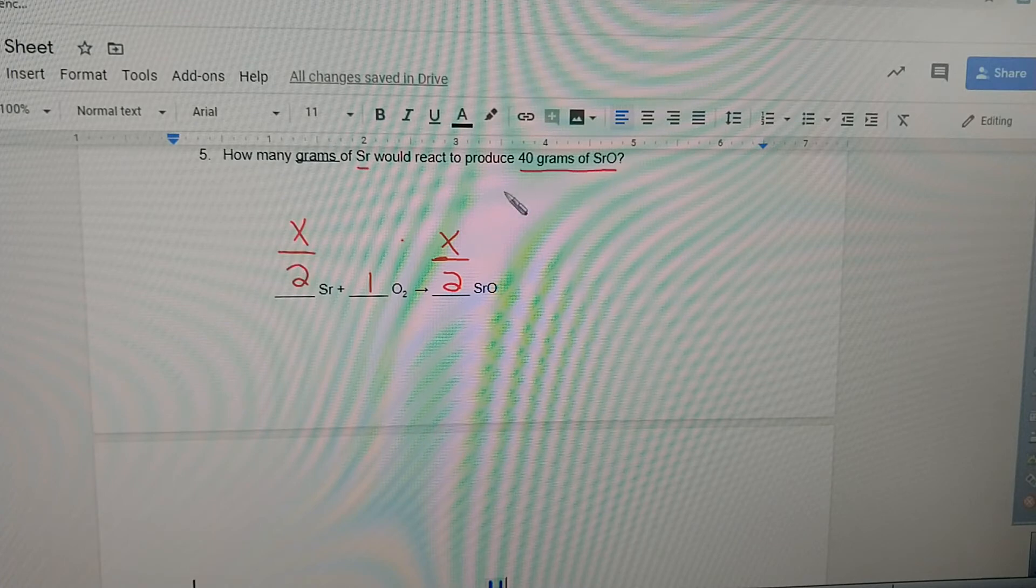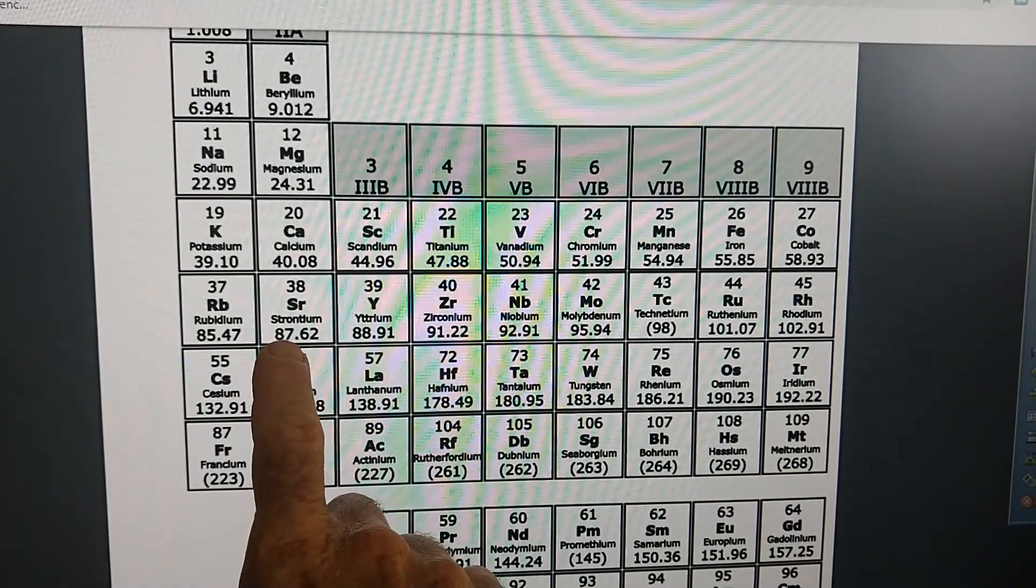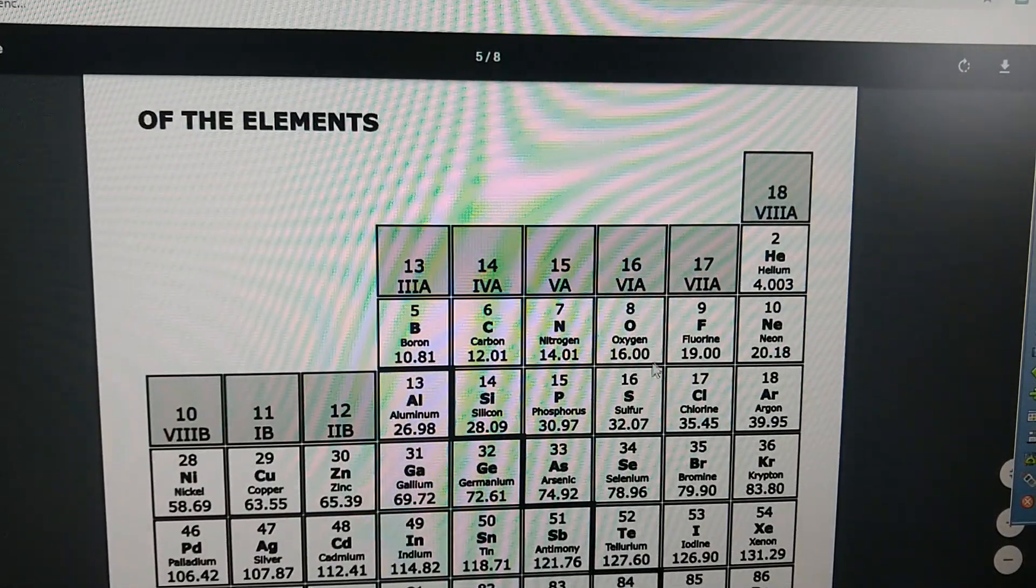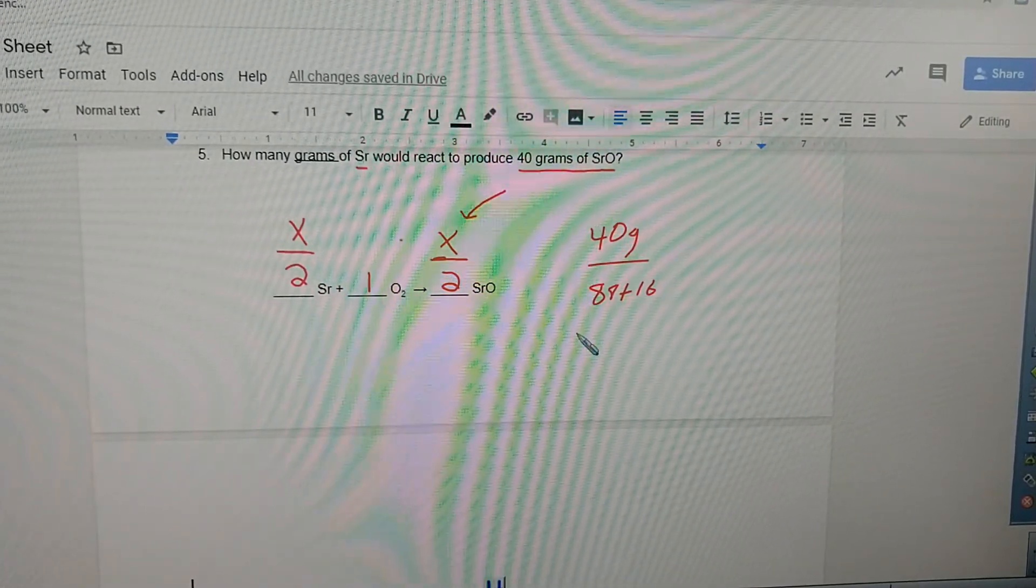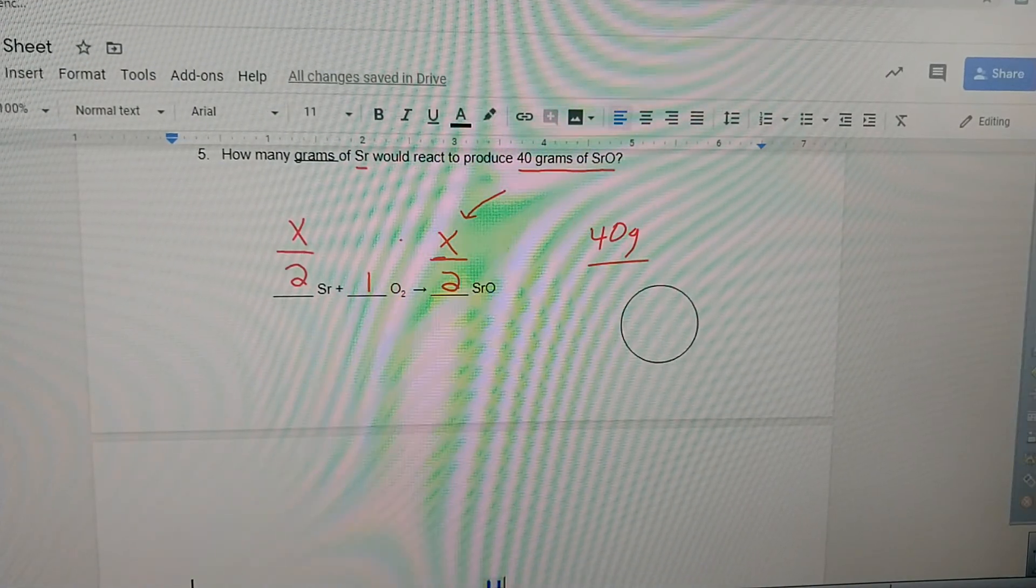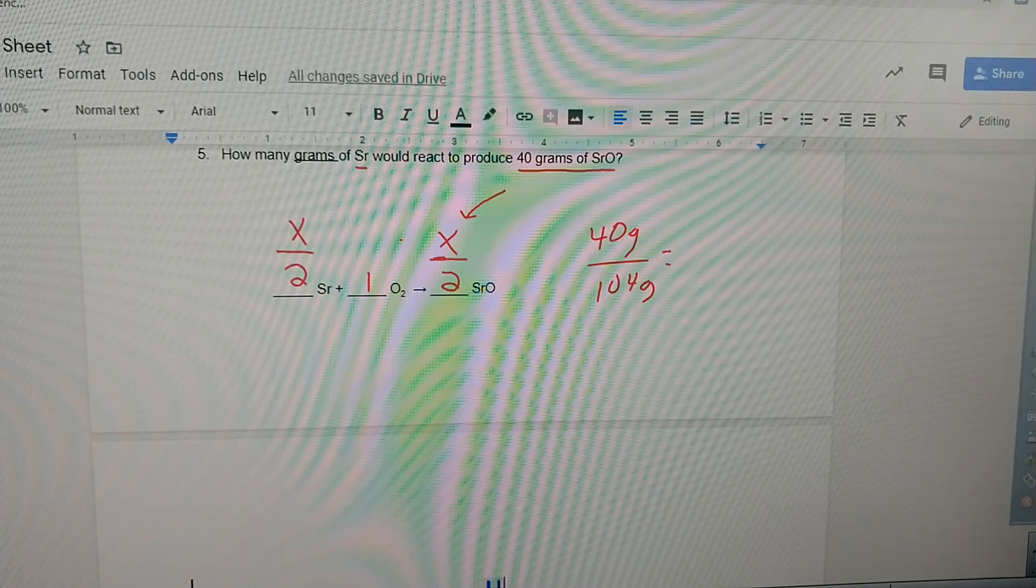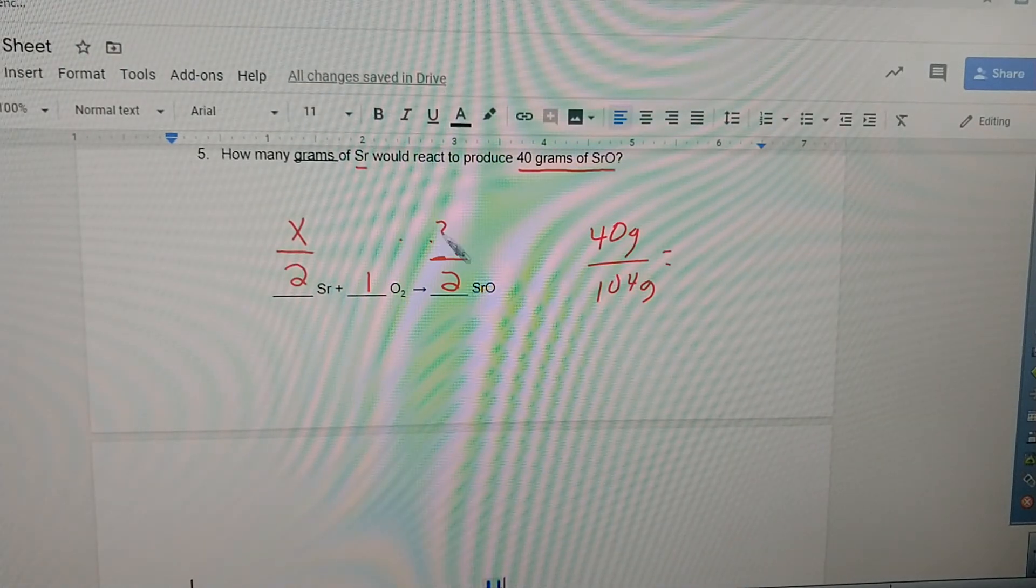We're given 40 grams of strontium oxide. We cannot write the 40 there. We have to convert 40 grams to moles. 40 divided by strontium oxide, which we're going to have 88 plus 16. Strontium is 88, oxygen is 16. 88 plus 16, that's going to be 104. So 40 divided by 104 grams gives us the number of moles. 40 divided by 104, 0.38 moles. So 0.38 moles of strontium oxide would be equal to how many moles of strontium? 0.38 is to two, as 0.38 is to two.